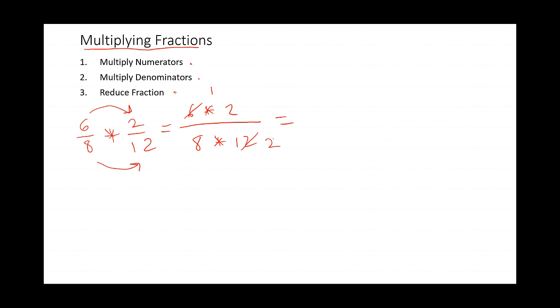Now I see a 2 in the denominator and the numerator. I'm left with 1 over 8. So multiplying fractions is straightforward. Just multiply the numerators, multiply the denominators, and reduce. Now let's go to the next slide.